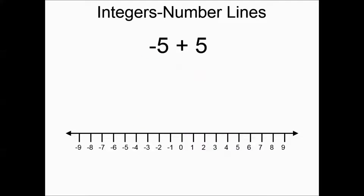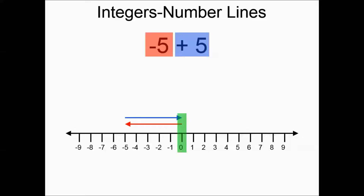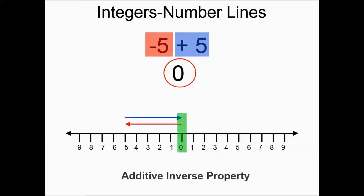Negative five plus five: starting at zero we go left five, then right five, and we end up back at zero. The arrows were in different directions but exactly the same length, so they canceled each other out. If you remember your properties, this is actually an example of the additive inverse property.